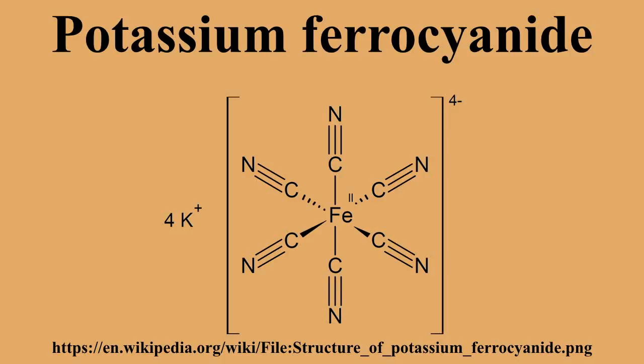Potassium ferrocyanide is used in the production of wine and citric acid. In the laboratory, it is used to determine the concentration of potassium permanganate, a compound often used in titrations based on redox reactions. It is also used in a mixture with potassium ferricyanide and phosphate buffered solution to provide a buffer for beta-galactosidase, which is used to cleave X-gal, giving a bright blue visualization where an antibody conjugated to beta-gal has bonded to its target. On reacting with Fe3+ it gives a Prussian blue color, and thus it is used as an identifying reagent for iron in labs.